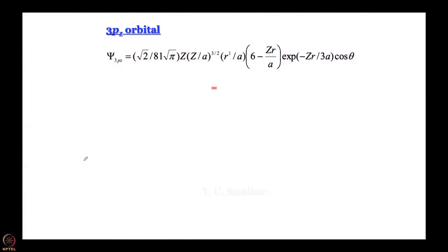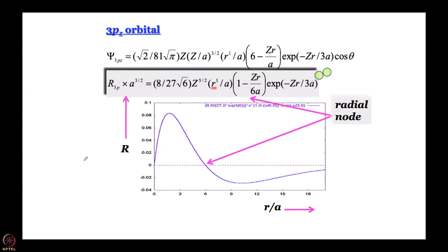Let us move on to 3p orbitals. The 3pz orbital has the functional form: constant × r × (6 − Zr/a) × e^(−Zr/3a) × cos θ. Setting the radial factor to zero gives a radial node at r = 6a/Z, which for Z=1 is simply r = 6a. So the function starts at 0, goes through a maximum, passes through the radial node, changes sign, and then goes asymptotically to zero. The locus of the radial node is a sphere.